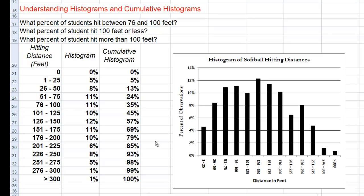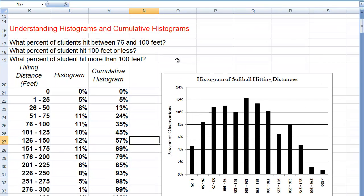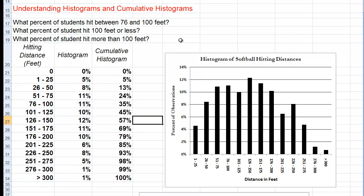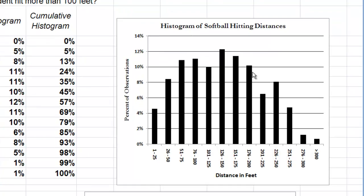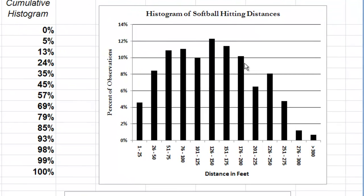In this brief tutorial, I'm going to help you understand how we use and interpret histograms and cumulative histograms. For this tutorial, I'm going to be using data from our softball hits where students went outside, hit softballs as far as they could, and measured how far they hit. What we have here is the Excel output after we used the data analysis tool pack to create a histogram. I'm assuming you understand how to create a histogram like the one you see here, and now we want to know how to interpret it.